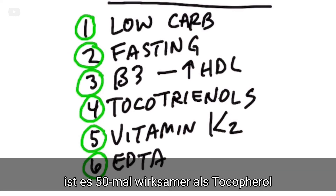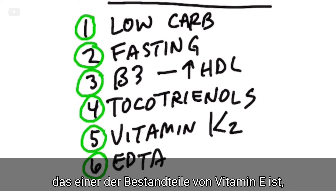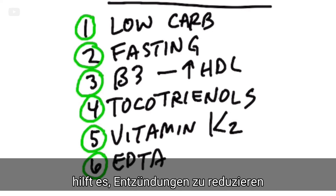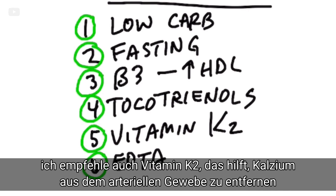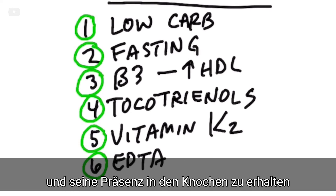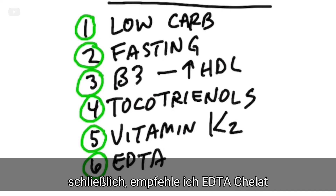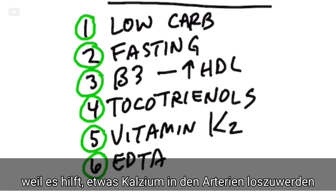I would also recommend tocotrienols, because that is going to protect the inside of the arteries against free radicals. It's 50 times stronger than the tocopherols — tocotrienols are a type of vitamin E — and that will help you reduce inflammation. Take vitamin K2, which helps to mobilize calcium out of the arteries and keeps it in the bone. And lastly, take a chelator called EDTA, which can help remove some of the calcium inside the arteries.